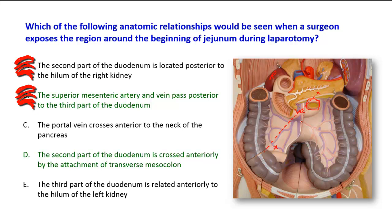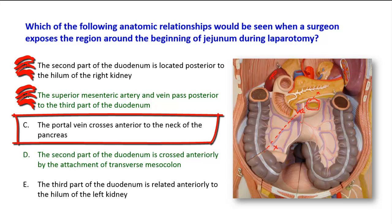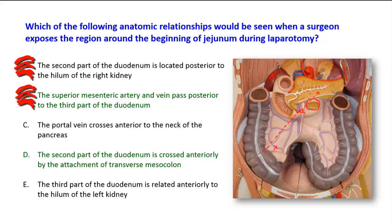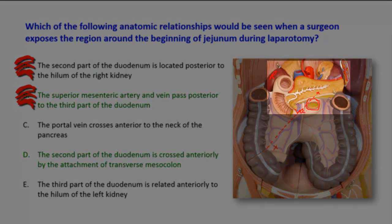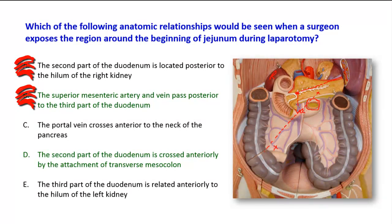So option B is wrong. Option C: the portal vein crosses anterior to the neck of the pancreas. The portal vein is formed by the union of the superior mesenteric vein and the splenic vein. They unite behind the neck of the pancreas to form the portal vein that goes into the liver. So it is behind the neck of the pancreas at the level of the transpyloric plane, not in front of the neck of the pancreas.